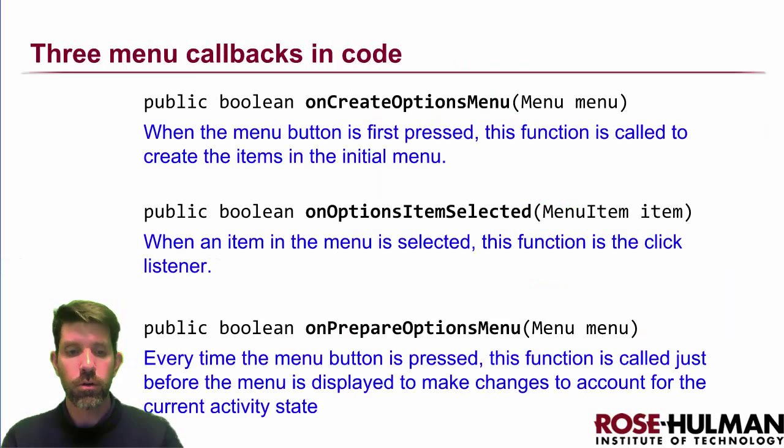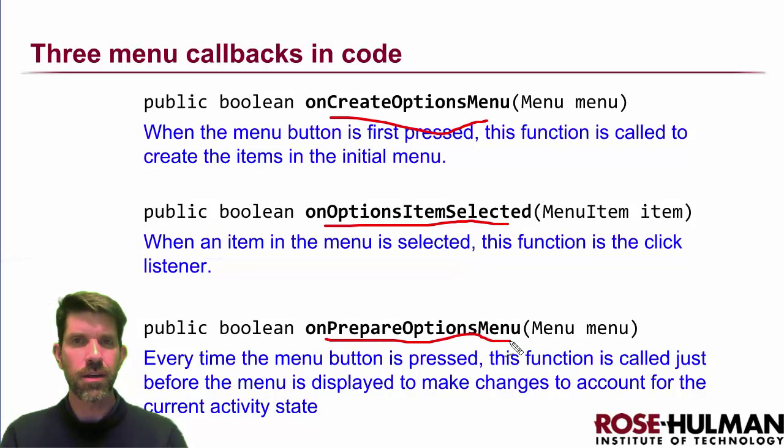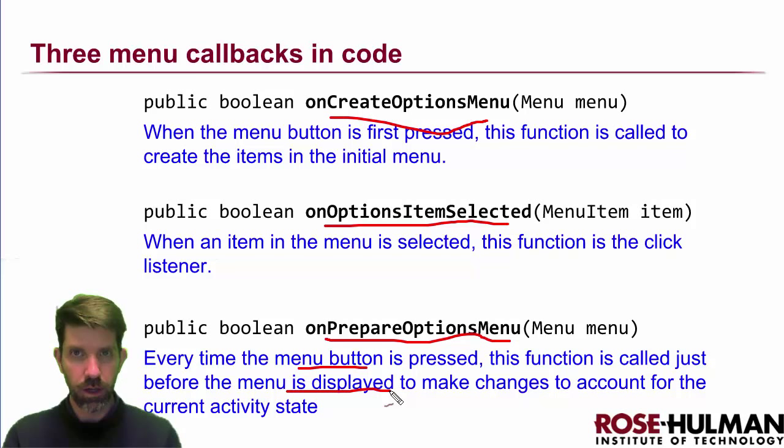As far as what to do in code, there are actually three callbacks we care about. We saw on create options menu. Then on options item selected is like our onClick callback that we have for buttons. And then there's another one I rarely use that they don't even stub in for us: on prepare options menu. If you want the items in the menu to be dependent on some state of your code, it's called just before displaying the menu so you can make any changes on the fly. Good thing to know about.